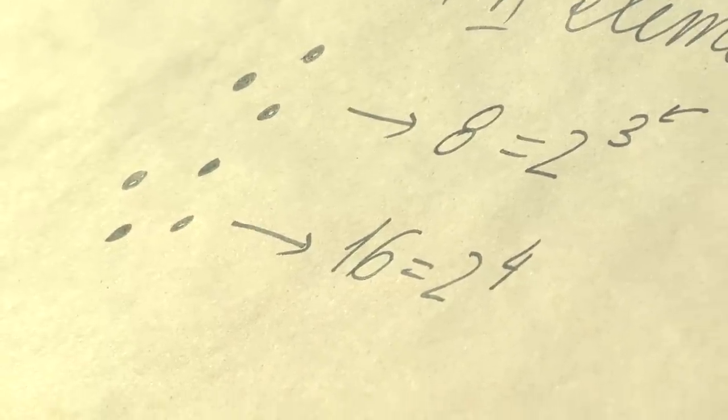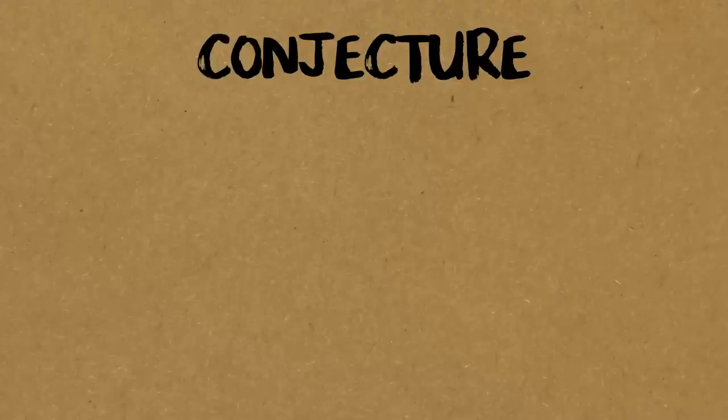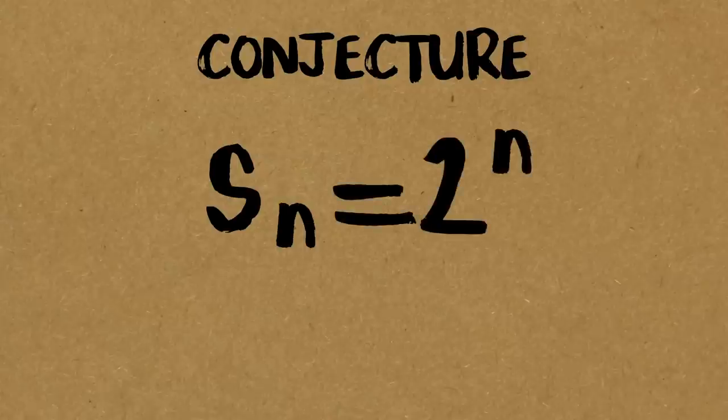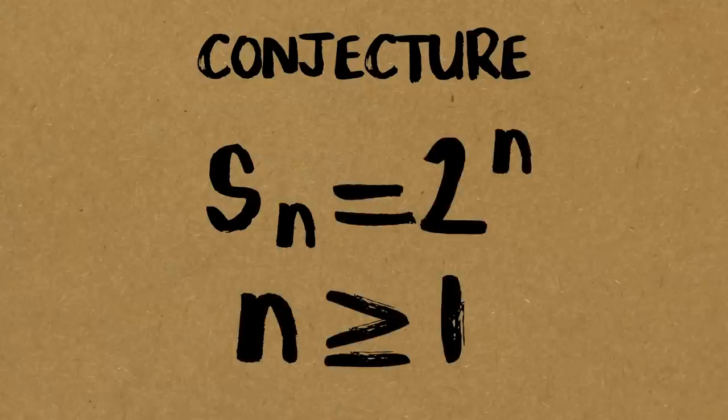You're saying, oh maybe the answer is a certain power of 2 and the power of the exponent looks like it's the number of people or the number of elements. And at this point you say I'm gonna conjecture that the answer for this problem, which I'm gonna call S_n, the number of subsets if you have n people, is precisely 2^n where n is greater than or equal to 1. And now that you have this conjecture, induction can kick in.